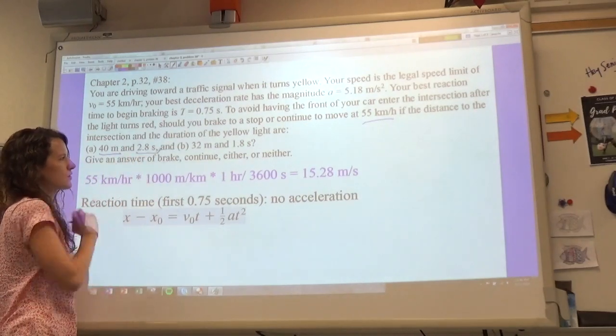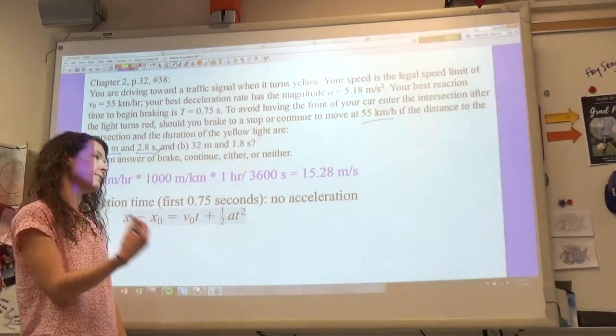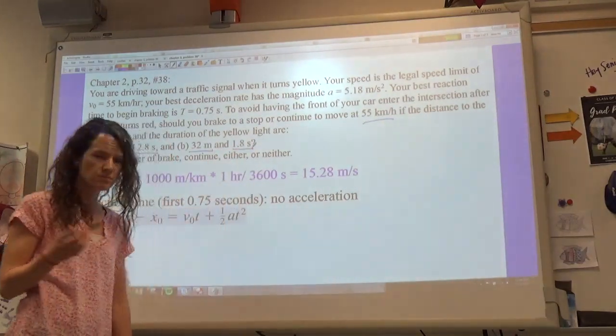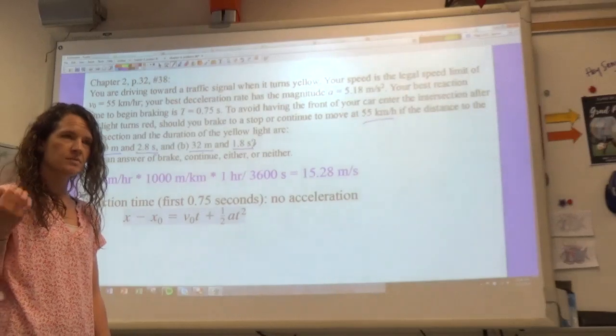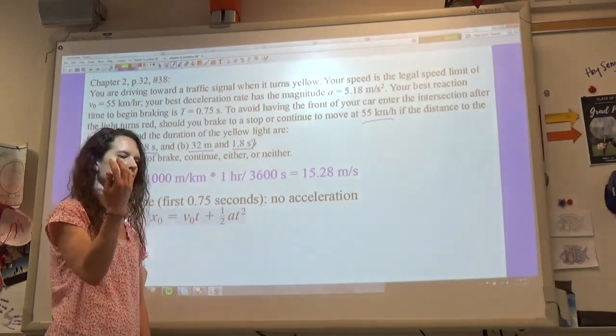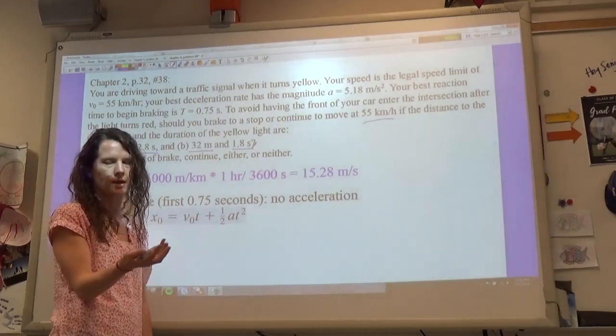Part A tells you that you have 40 meters to stop and the light turns red in 2.8 seconds. Part B tells us that you have 32 meters to stop and the light turns red in 1.8 seconds. And so for both situations we have to say is it possible to stop, is it possible to keep going, or are both okay or are neither okay.